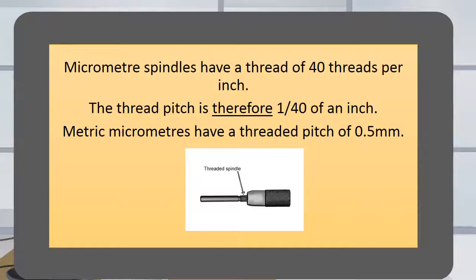Micrometer spindles have a thread of 40 threads per inch. The thread pitch is therefore 1/40th of an inch. Metric micrometers have a threaded pitch of 0.5mm.